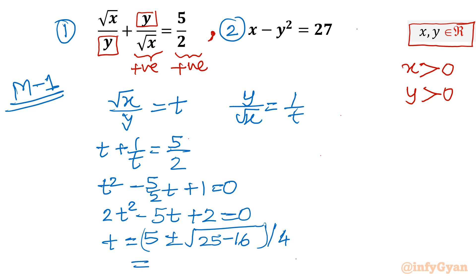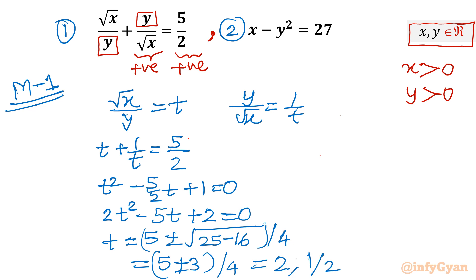Now 25 minus 16 is 9, and square root of 9 is 3. So t equals 5 plus or minus 3, divided by 4. That gives t equals 8 over 4, which is 2, or t equals 2 over 4, which is 1 over 2. Remembering that t is the substitution for square root of x over y, we have t equal to 2 and t equal to 1 over 2.